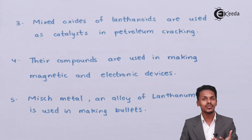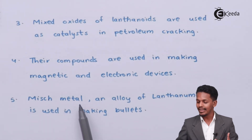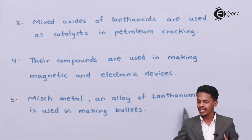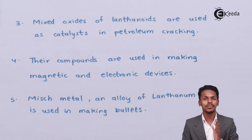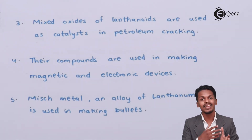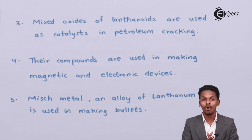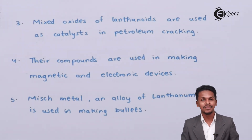The misch metal and alloy of lanthanum is used in making bullets. When lanthanum is mixed with a particular other element, it can be used in the making of bullets.